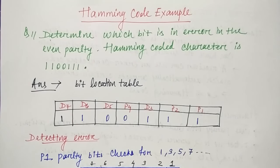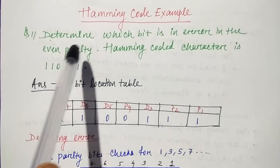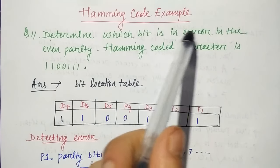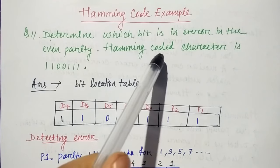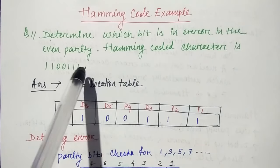Hello students! In this video, we will see the Hamming code example. We will be asked to determine which bit is an error in the even parity. Hamming coded character is this one.